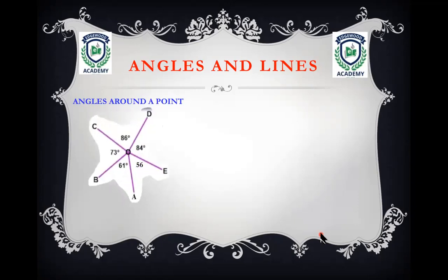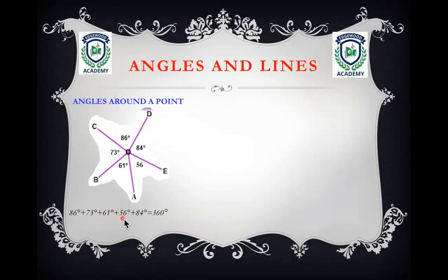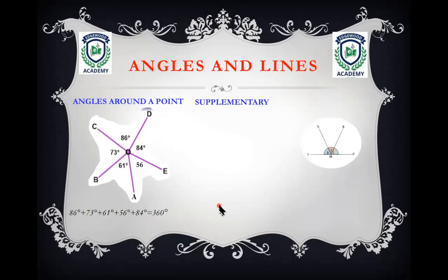Angles around a point: here is a point surrounded by angles. When we sum up these angles it should be equal to 360 degrees. For example, 86° + 73° + 61° + 56° + 84° should be equal to 360 degrees.